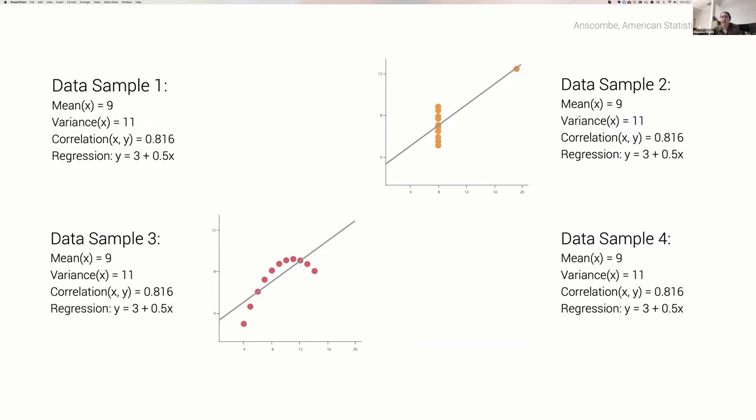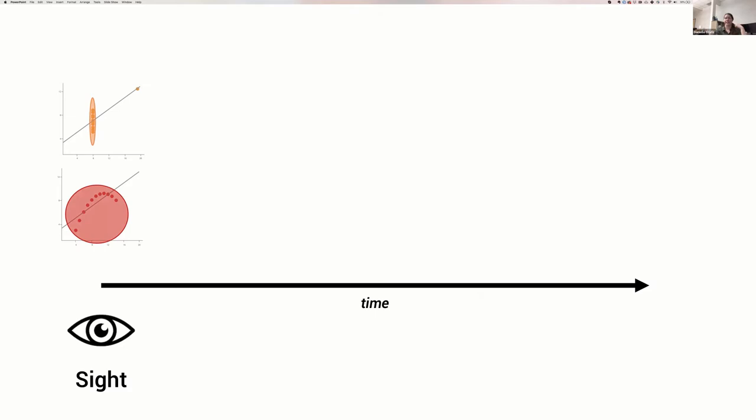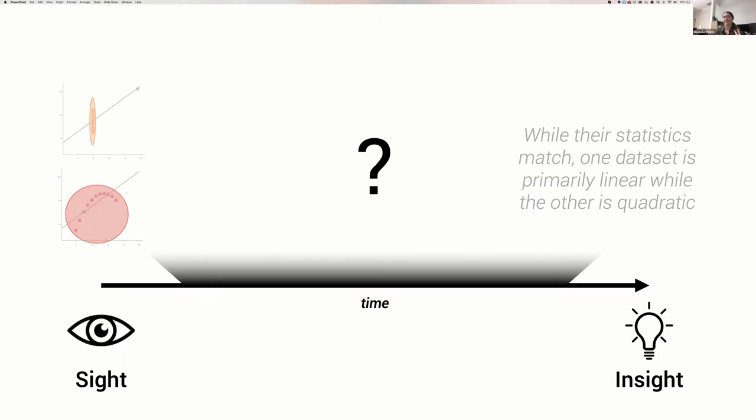So what's going on here? How do we build knowledge from data visualizations that we can't from statistics? The process of interpreting data happens over time. It starts with our sense of sight. Lots of magic happens. And at the end, we reach insight, the knowledge that we generate through these visualizations. By understanding the perceptual and cognitive processes between sight and insight, we can understand how the ways we visualize data determine the knowledge people can infer.